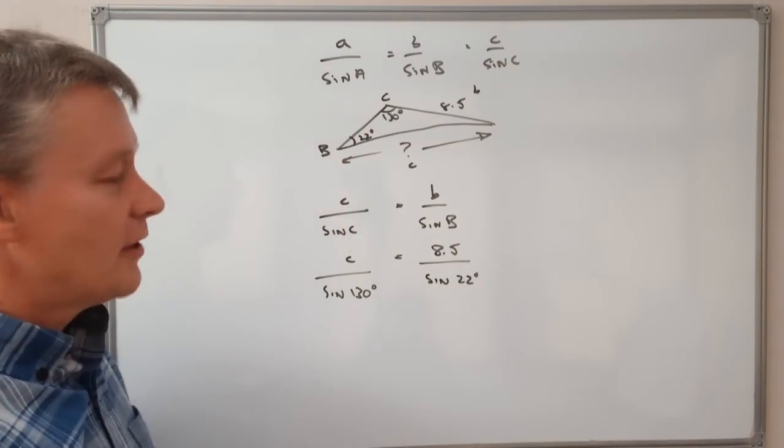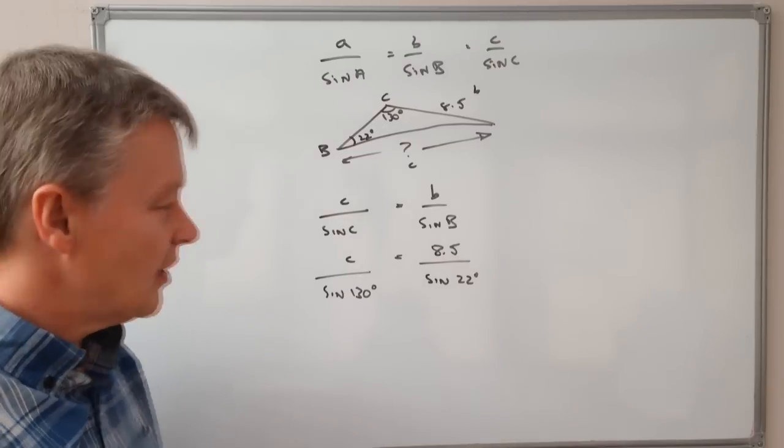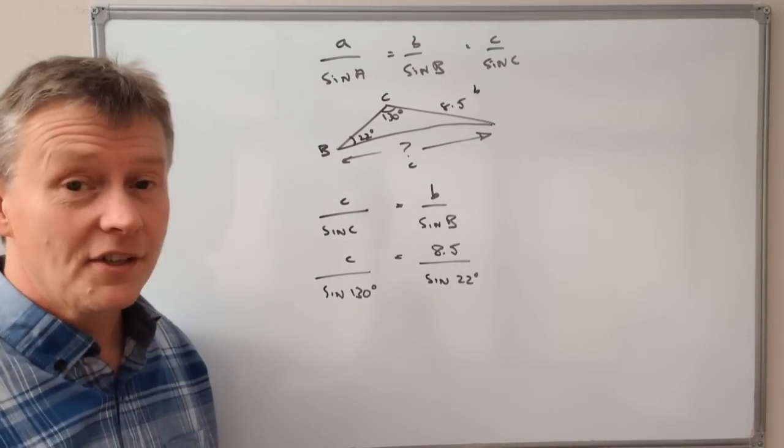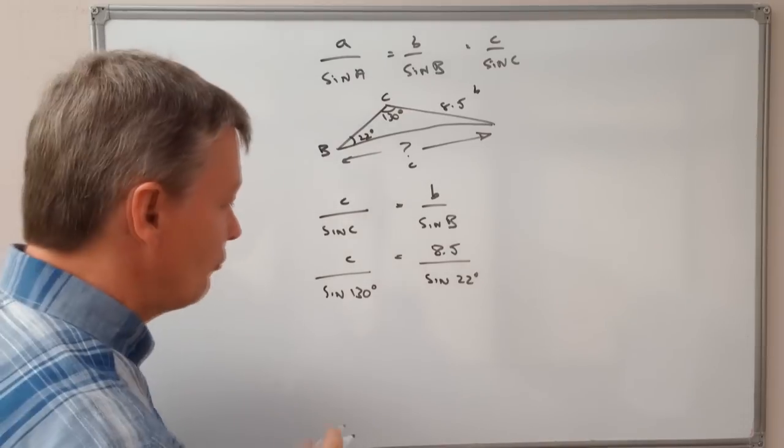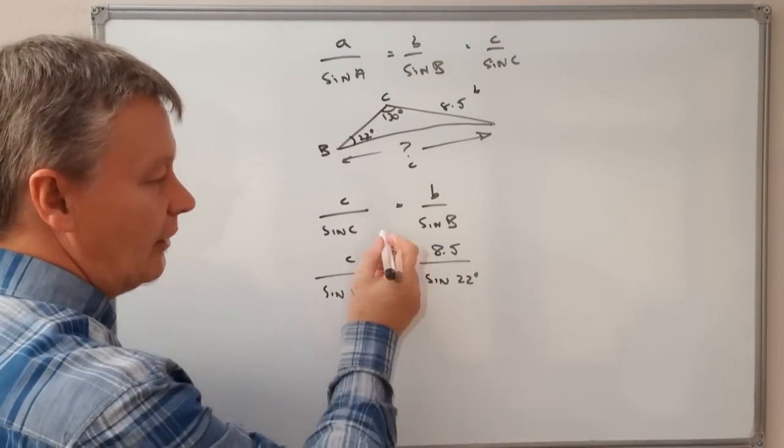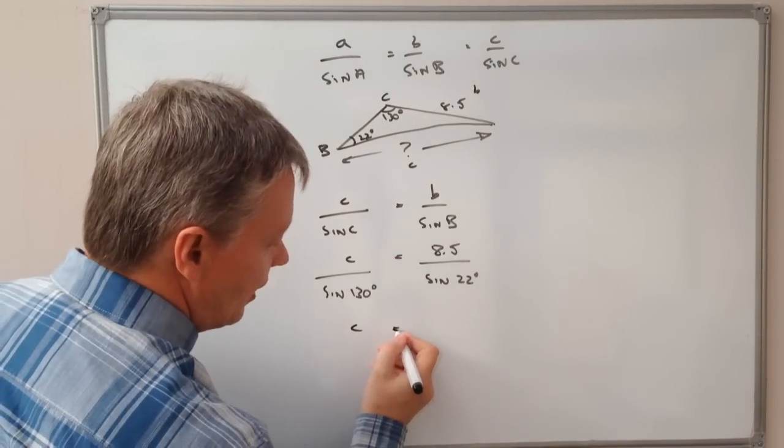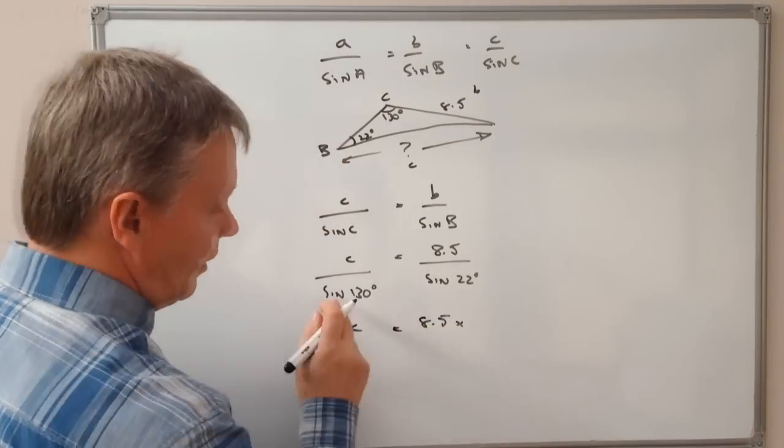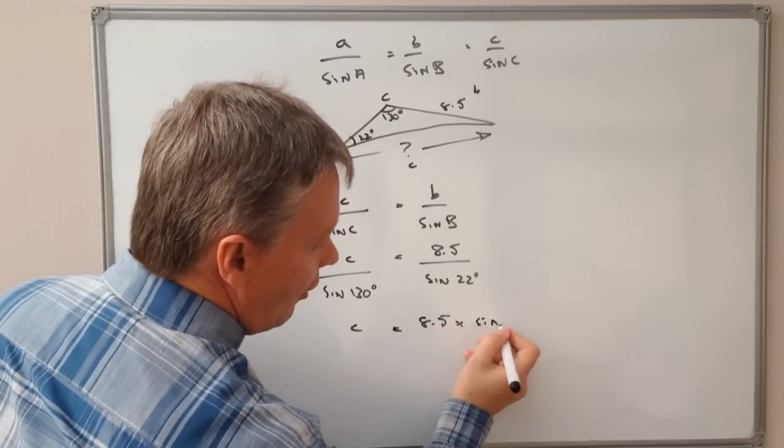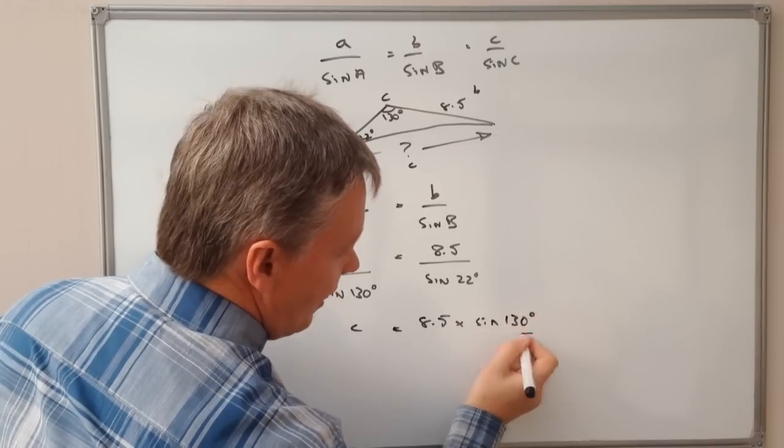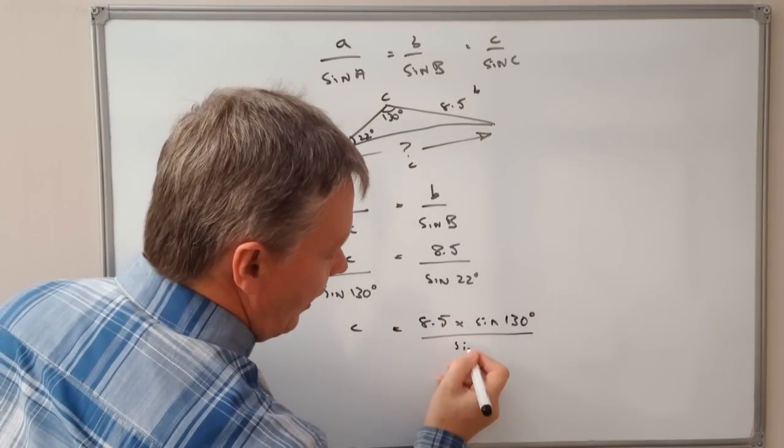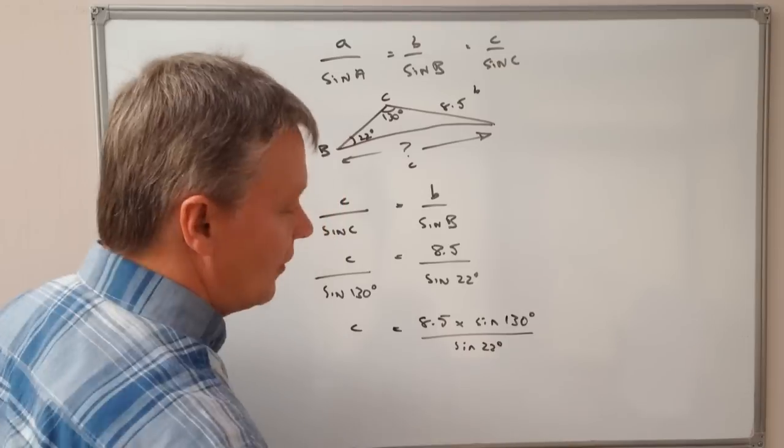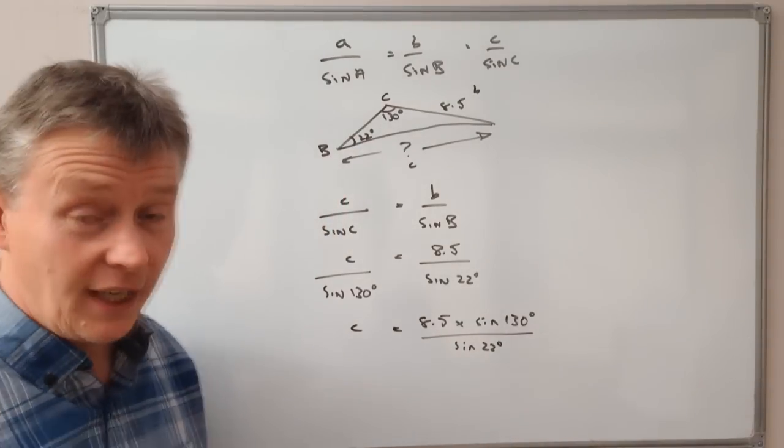Now I can do a little bit of manipulation, just a little bit of algebra manipulation. If you need to know how to do that, have a look at one of the other videos, but really we're just going to balance everything around the equal sign. So it's going to give me C equals 8.5 multiplied by sine of 130 degrees, and I'm going to divide that by the sine of 22 degrees. I put that information into my calculator.